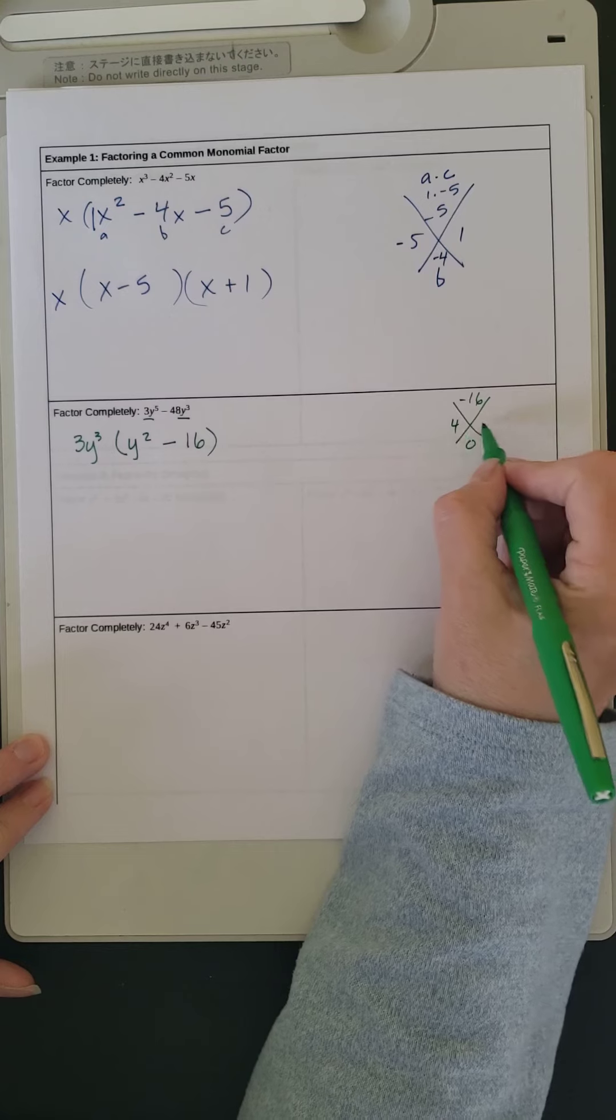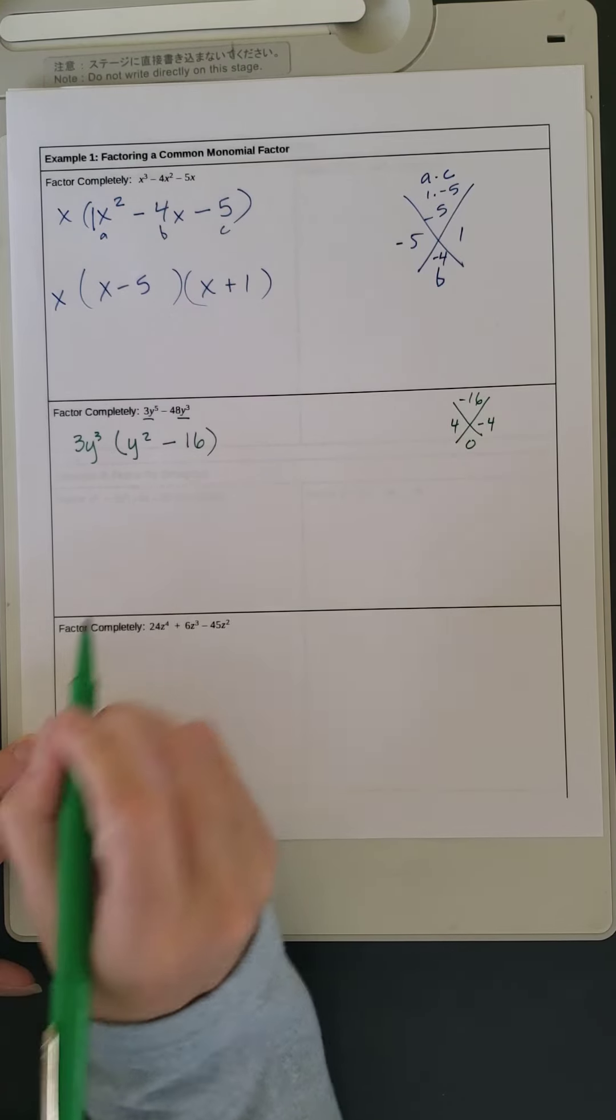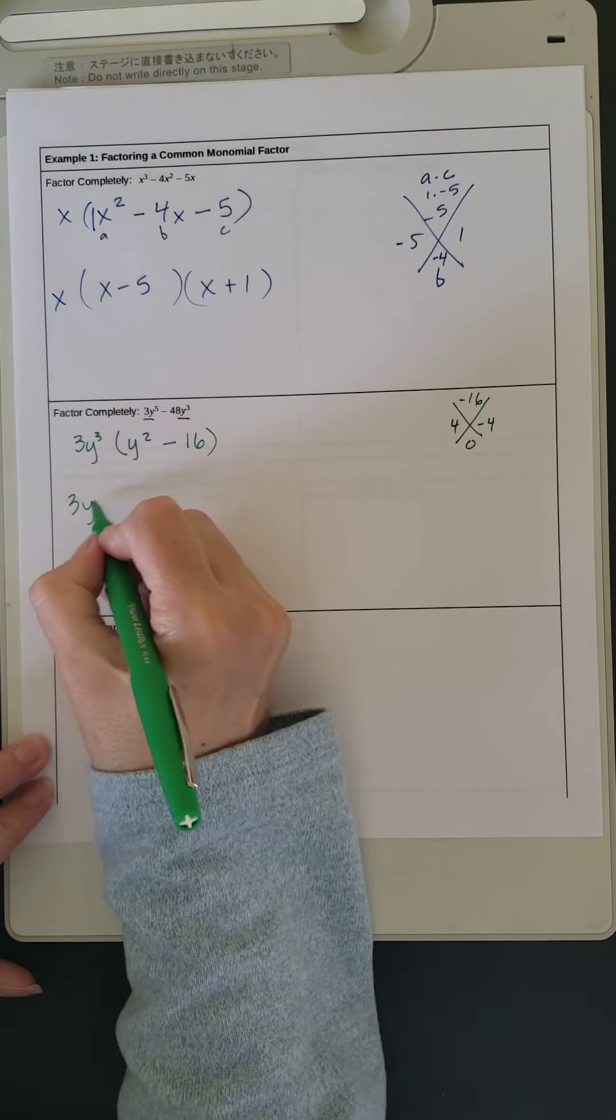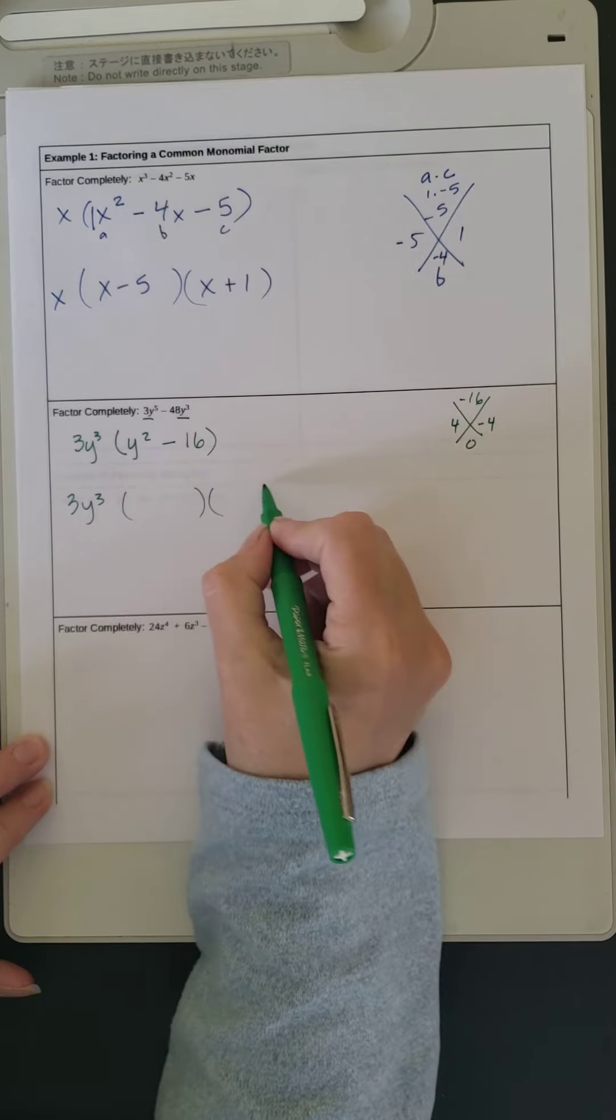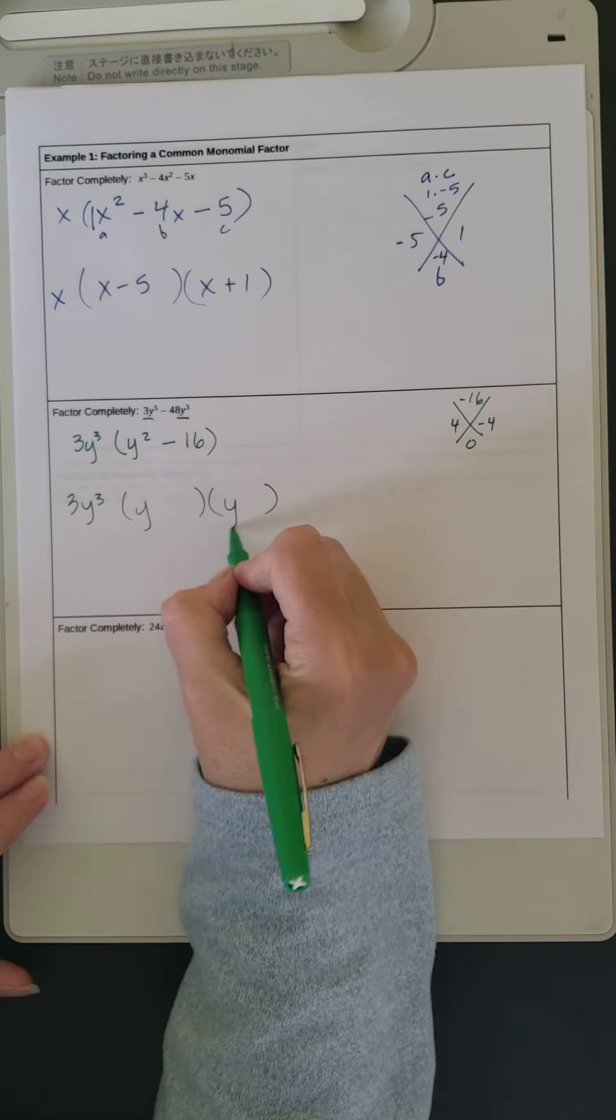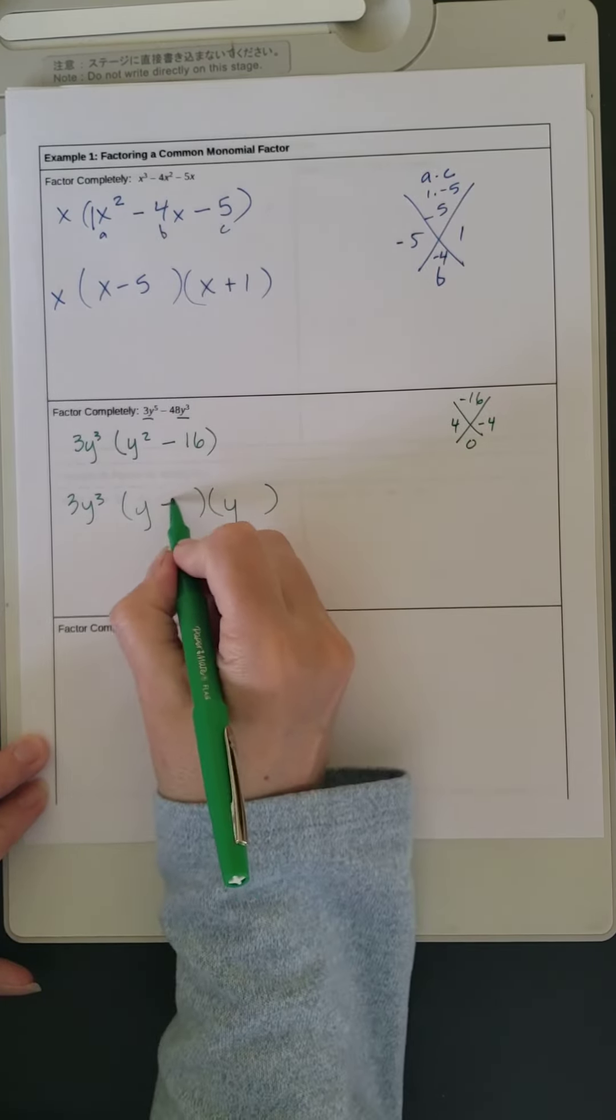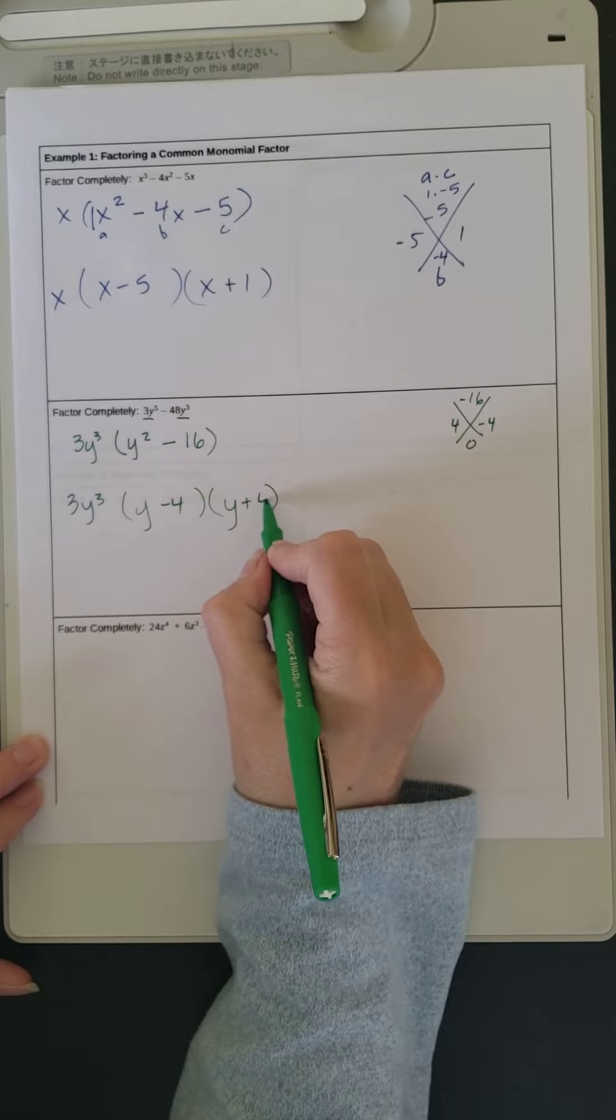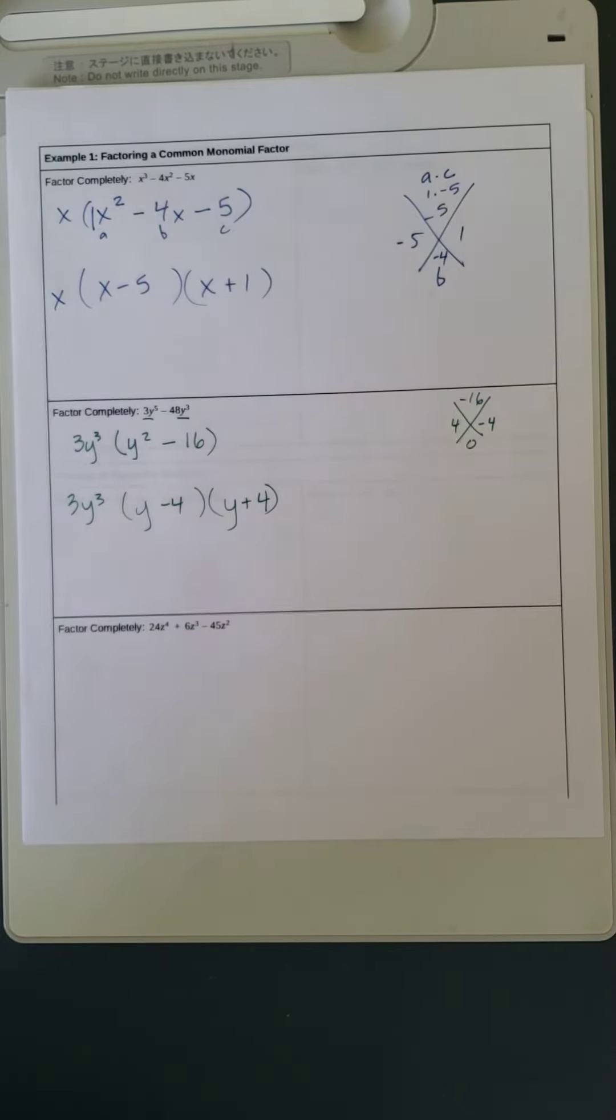We know that it's 4s. So 4, negative 4. So bring down your 3y cubed. Y, y. This has to be negative 4 and positive 4. Here we go.